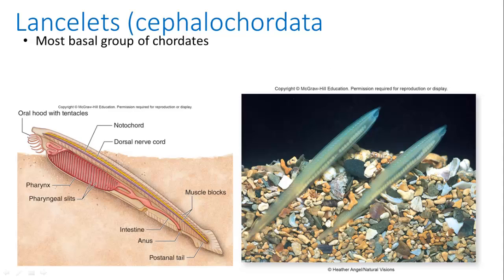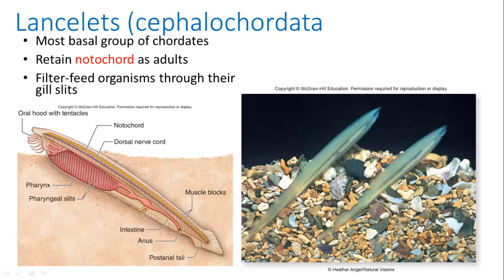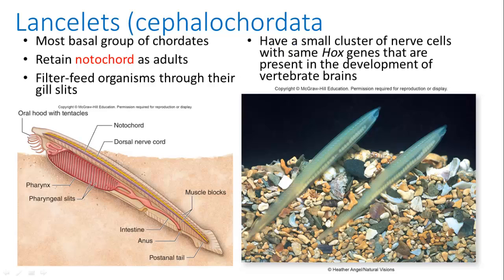Our two invertebrate species include the lancelets, which is the most basal group of chordates, also called Cephalochordata. They retain the notochord as an adult, so they do not have bone structures as adults. They're filter feeders — they stick out of the substrate and filter the water for organisms which they digest. They also have a small cluster of nerve cells with Hox genes, which were important for the development and radiation of animals, and these are also found in vertebrate brains.